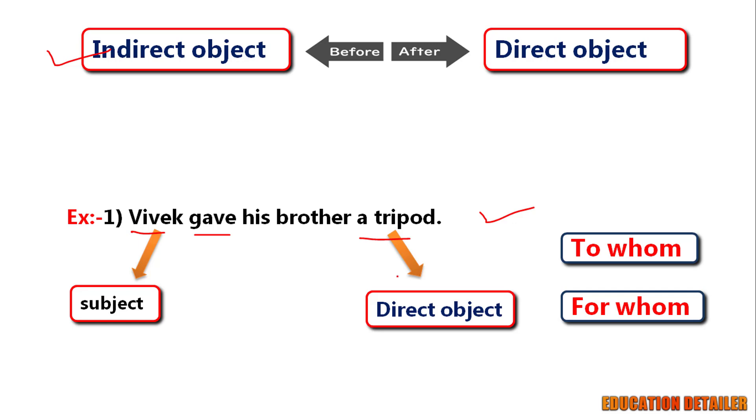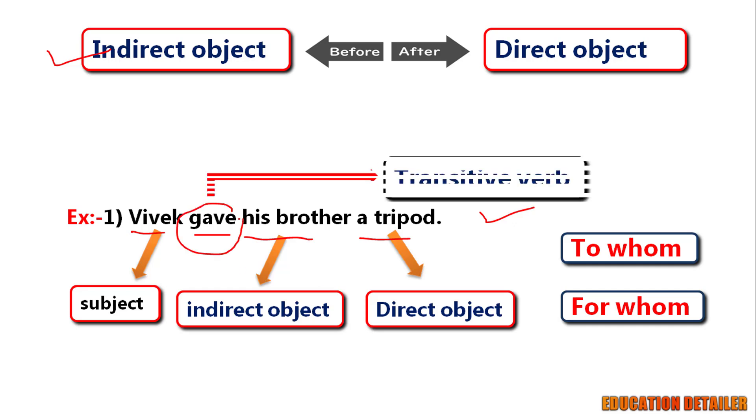Now ask a question: Vivek gave a tripod to whom? His brother, the indirect object. So here, the transitive verb gave took both the direct and indirect object.